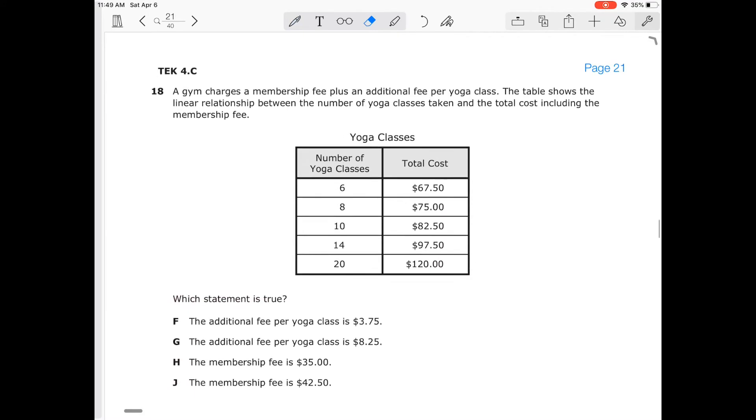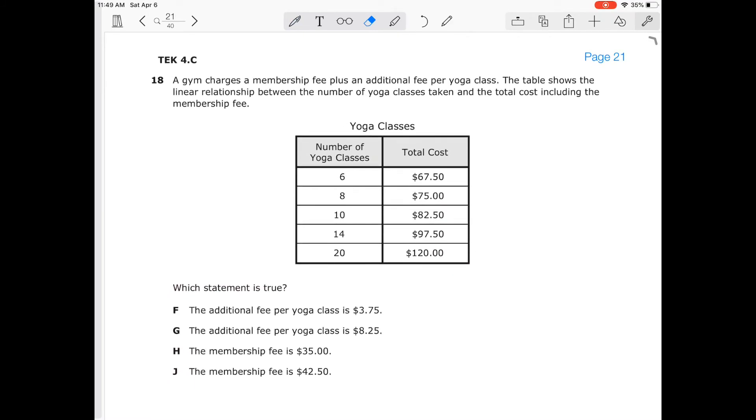Number 18, TEK 4C, gym membership has a fee plus an initial fee per yoga class. So that's y equals mx plus b. That's our initial fee. And then the m is our fee per class. So really, we need to find our slope and our y-intercept. So the table shows the linear relationship between the number of yoga classes and the total cost, including the membership fee.